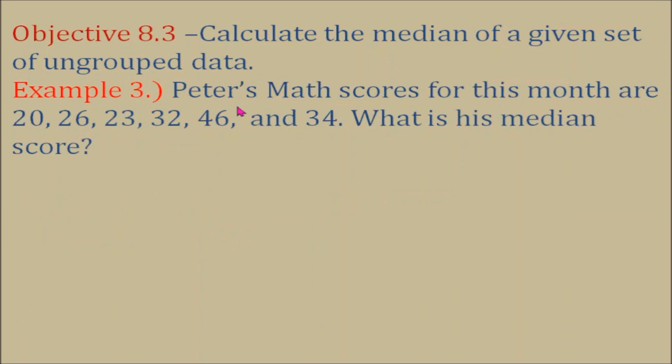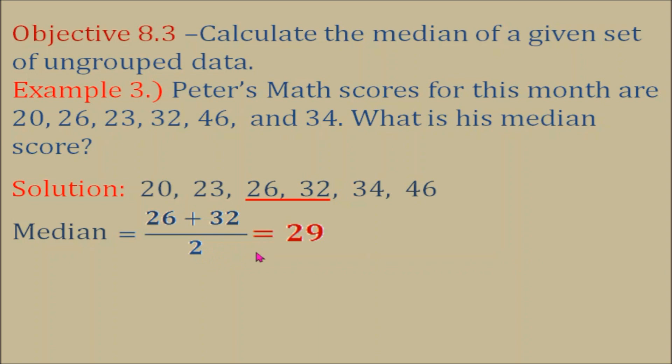Example number three, Peter's math scores for this month are 20, 26, 23, 32, 46, and 34. What is his median score? Again, for our solution, we are going to arrange these numbers from the lowest to the highest. There are six scores here. So, the middle scores are 26 and 32. Because there are two middle scores, we are going to add these two scores and then divide by two. 26 plus 32 is 58. 58 divided by two is 29. So, this is the median score, 29.